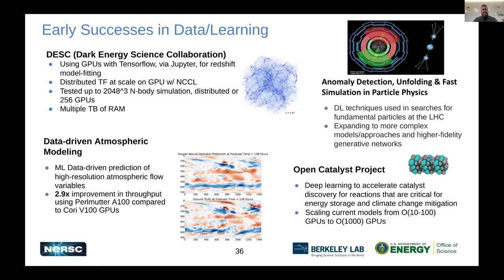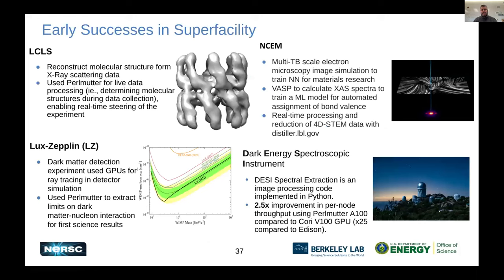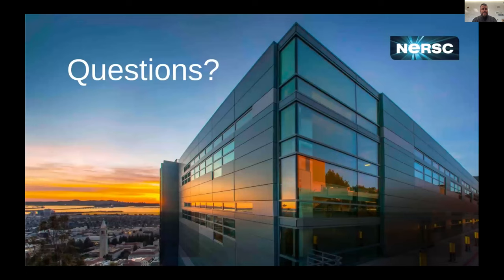One more highlight: early successes working with experimental facilities, including the LCLS at Stanford, the NCEM here at Berkeley Lab, the Dark Energy Spectroscopic Instrument (DESI), and the LZ project. All of these teams are up and running on Perlmutter and have stories you can read about on our website. I'll end there — I can take questions, or since I'm over time, I can answer them in the Google Doc as well.